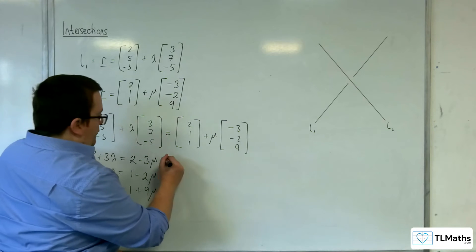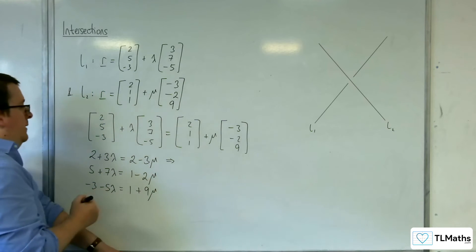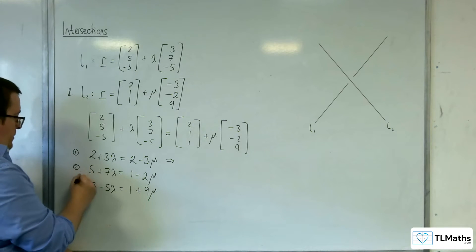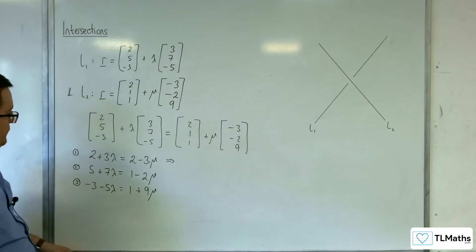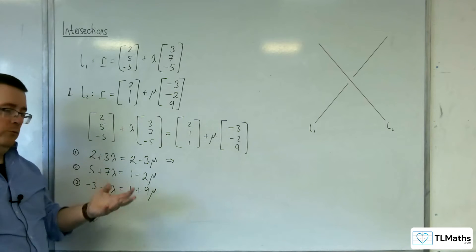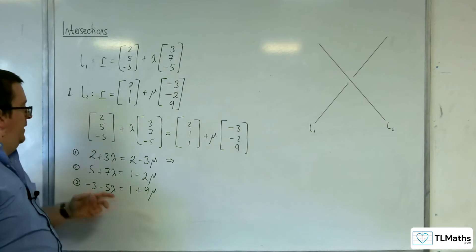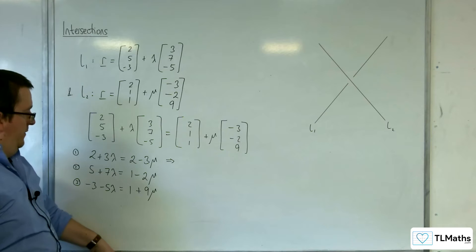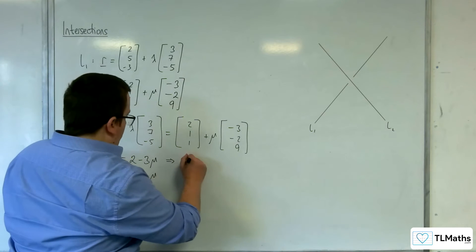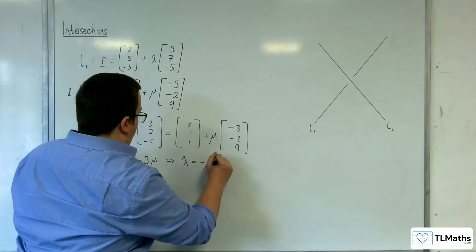Now the first equation here, so let's call this number 1, that number 2, and that number 3. So for equation number 1, we can subtract 2 from both sides and simplify this, and then divide through by 3, and we can say that lambda must be equal to minus mu.